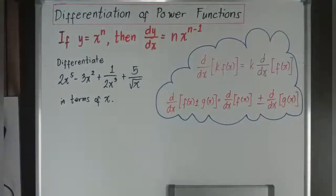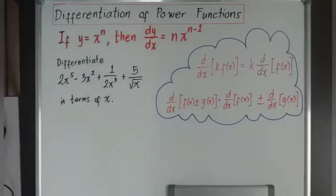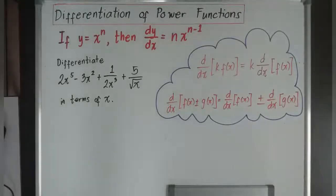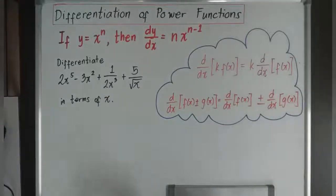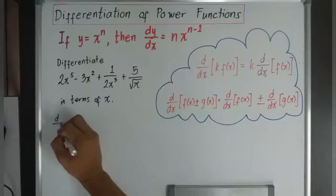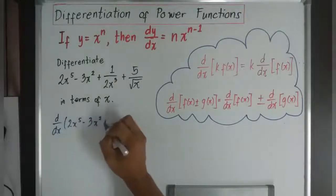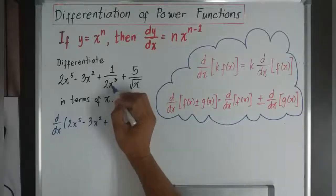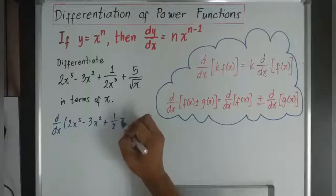Here is an example: differentiate 2x to the power of 5 minus 3x squared plus 1 over 2x cubed plus 5 over square root of x, in terms of x. One thing you need to know is to make everything a numerator before you employ the rules. So I'll write this as d over dx of 2x to the power of 5 minus 3x squared, and 1 over 2x cubed becomes one-half x to the power of negative 3.